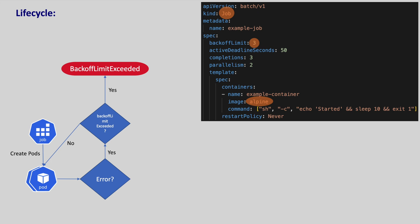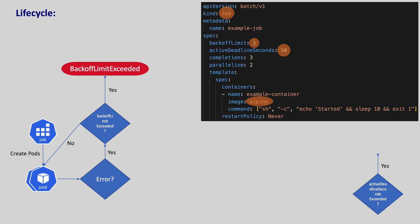Please note another property in the job manifest: active deadline seconds. With this, we define the maximum how long a job should run. If the job runs more than this period, the job will be marked as incomplete with a deadline exceeded error, no matter how many pods are created.